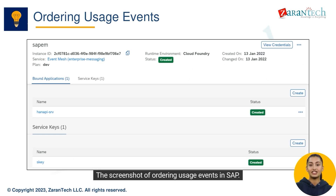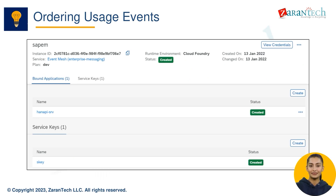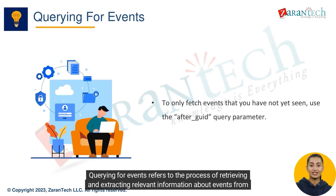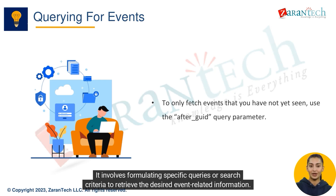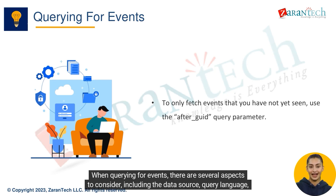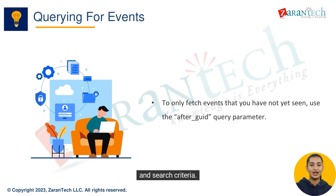Querying for events refers to the process of retrieving and extracting relevant information about events from a given data source or database. It involves formulating specific queries or search criteria to retrieve the desired event-related information. When querying for events, there are several aspects to consider, including the data source, query language, and search criteria.